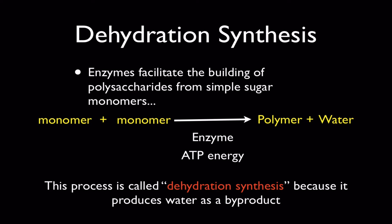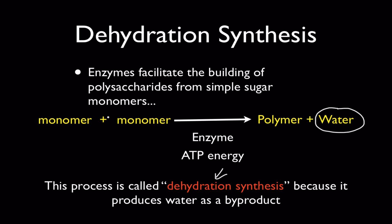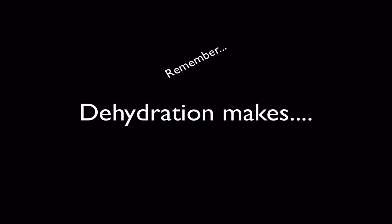We call this process dehydration synthesis because we're producing water — water is a byproduct of this reaction. It's important to remember dehydration synthesis because we're dehydrating, or taking water out — water is a product here. It's helpful to remember that dehydration makes polymers.